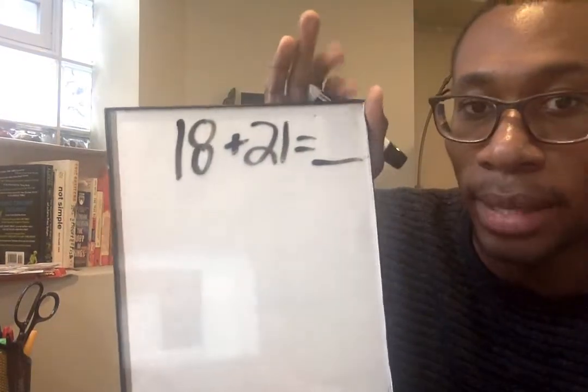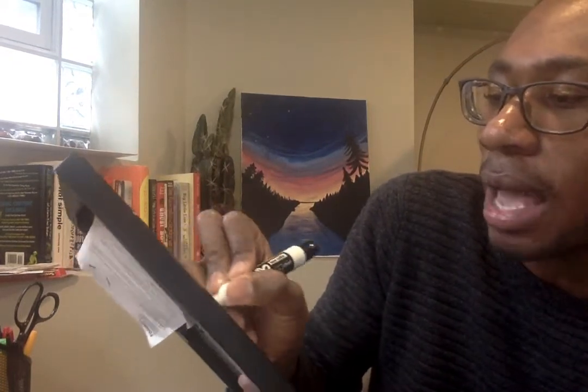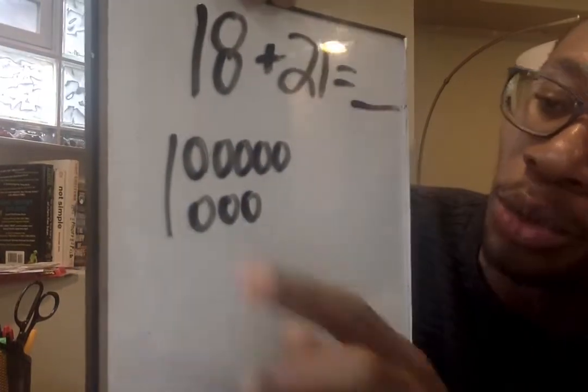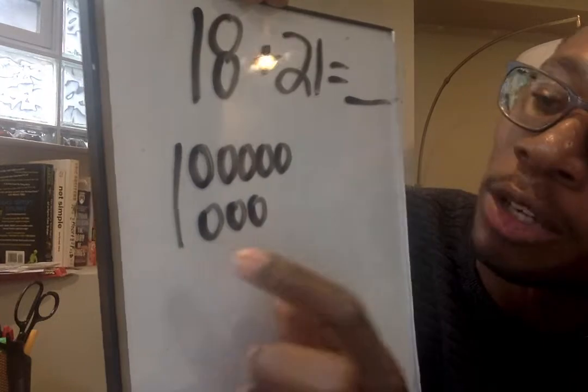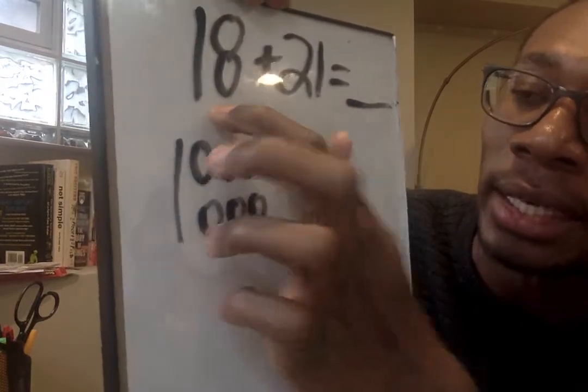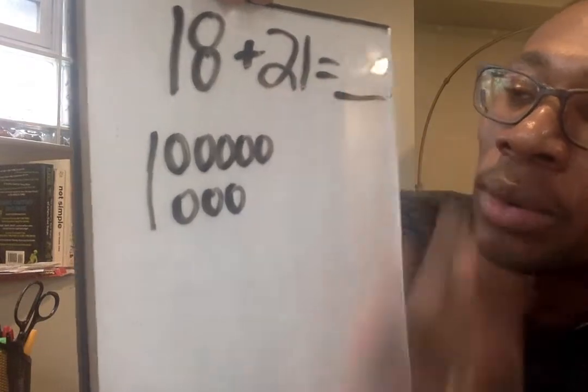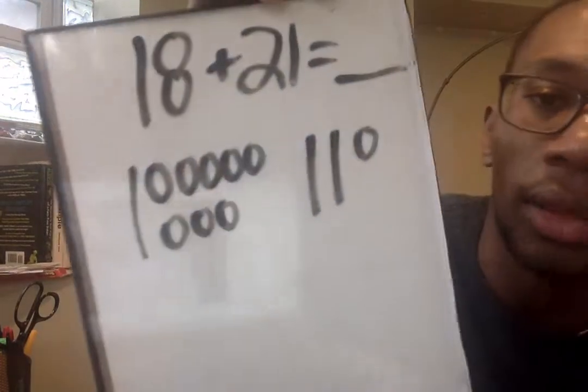18 plus 21 equals blank. Right away, I want to show my base-10 picture. So 10, 11, 12, 13, 14, 15, 16, 17, 18. Let's see if our pictures match. I drew one 10 and I drew eight ones to make 18. Now I'm not done yet. I want to show my other part, 21. So I'm going to do 10, 20, 21, just like that. For 21, I drew two tens for 20 and one for the one to make 21.